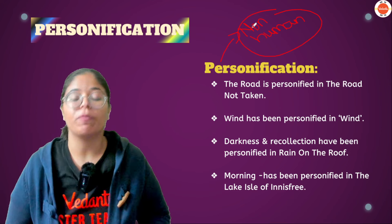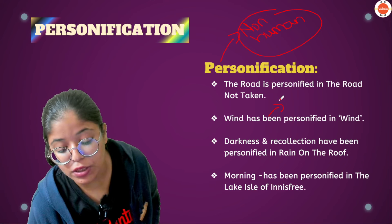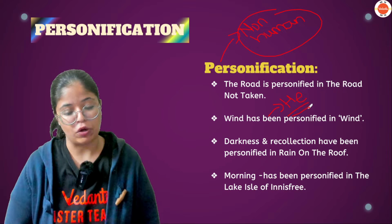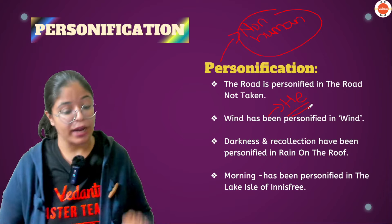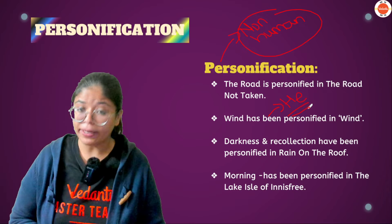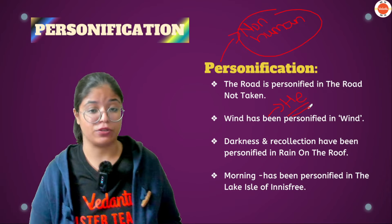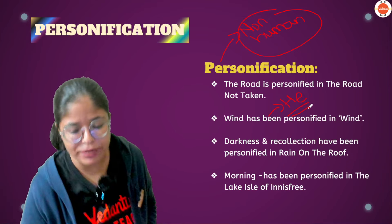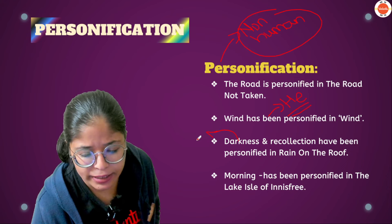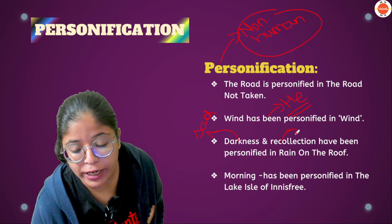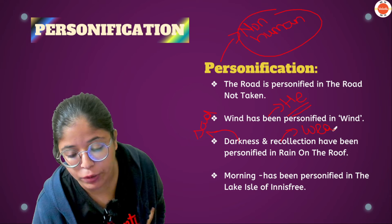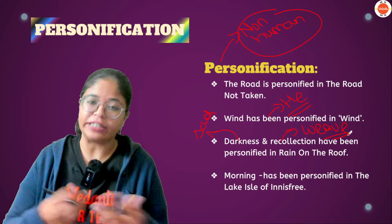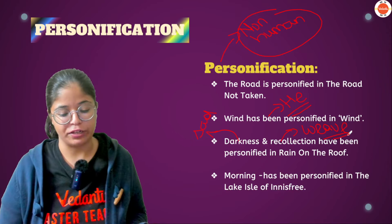Then, in 'Wind,' we personify the wind — why? Because we use the pronoun 'he,' which we use for human beings. That is again personification. Next, in 'Rain on the Roof,' we personify darkness and recollection. How? Because we use the word 'melancholy,' meaning to be sad. How can darkness be sad? Human beings are sad. And recollections are given the action of weaving, which is a human action. So that is again personification.